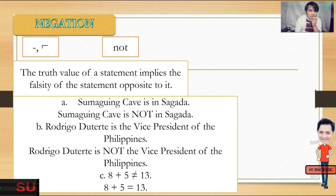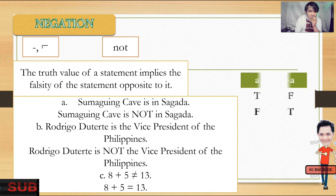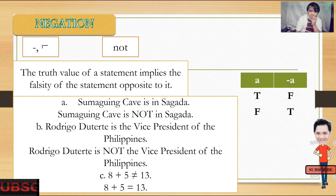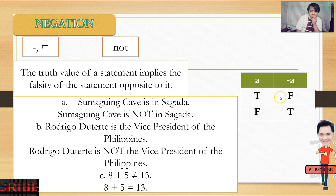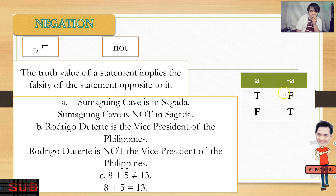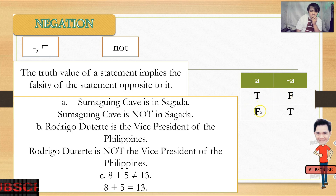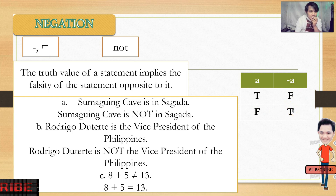The truth table of negation: if our statement A is true, the negation is false. But if your statement is false, its negation is true. That is negation.